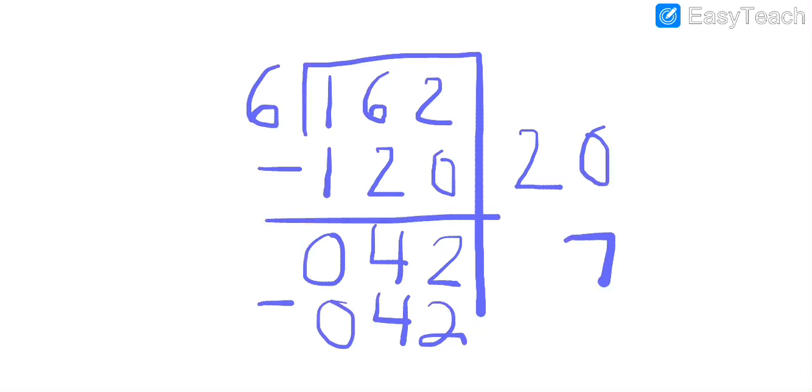Draw your subtraction equal sign. And now let's subtract. 42 minus 42 gives us 0. Oh, that 0 looks a little flat, that's what happens when you get to the bottom of the screen.